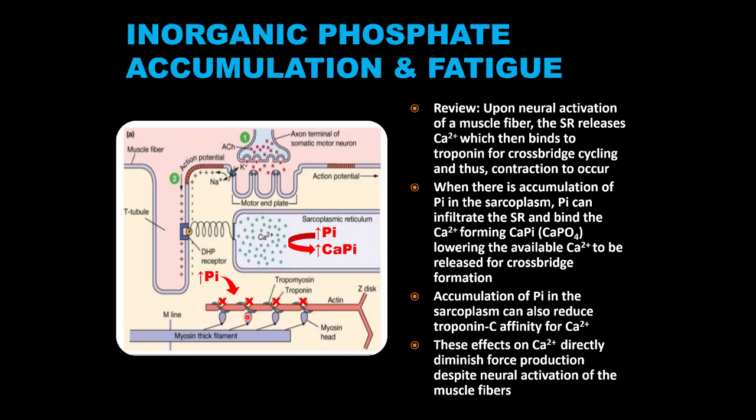No matter how much neurostimulation there is, the machinery for muscle contractions is being inhibited by proton and inorganic phosphate accumulation. This is why no matter how hard your voluntary efforts are — say during an all-out sprint — fatigue will occur and force you into a lower work output. Fatigue is a forced reduction in muscle contractility due to a hypoxic stress.